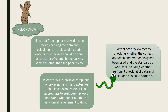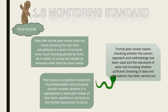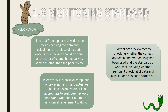1.6 Monitoring Standard: Peer Review. Note that formal peer review does not mean checking the data and calculations in a piece of actuarial work — such checking should be done as a matter of course, but usually by someone other than the peer reviewer. Formal peer review means checking whether the correct approach and methodology has been used and whether the standards of work have been met, including whether sufficient checking of data and calculations has been carried out. Peer review is a positive component of professionalism, and actuaries should consider whether it is appropriate to seek peer review of their work, whether or not there is any formal requirement to do so.